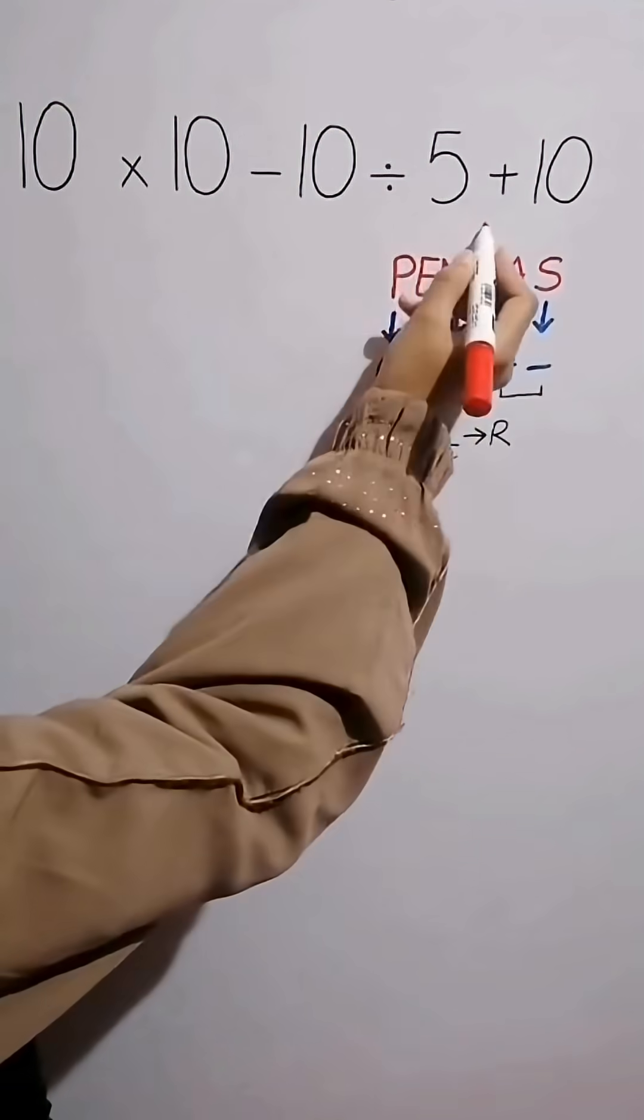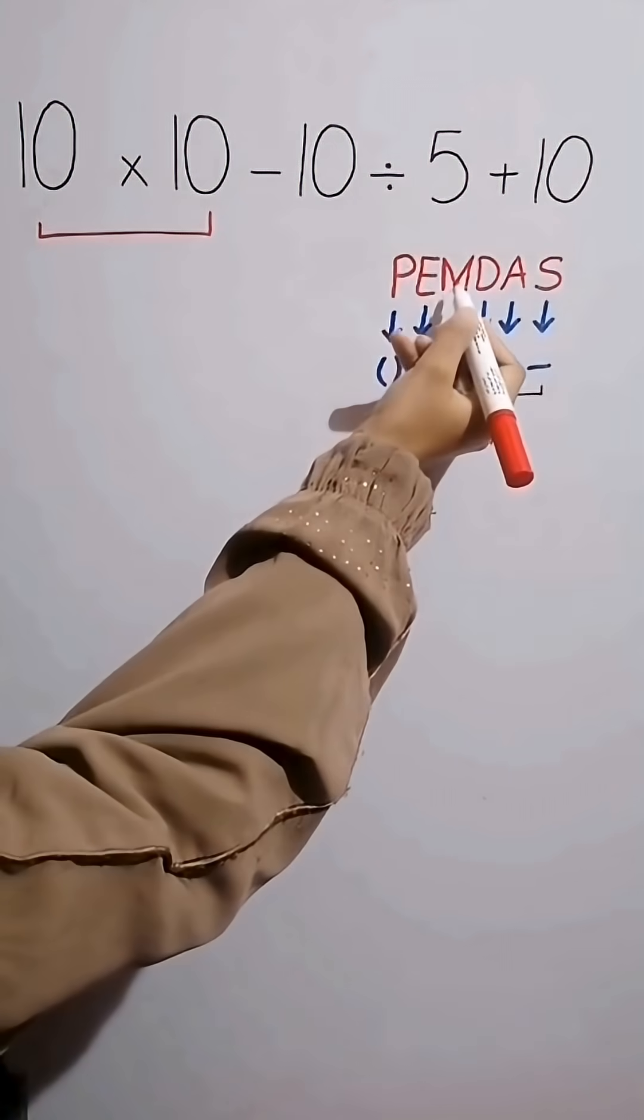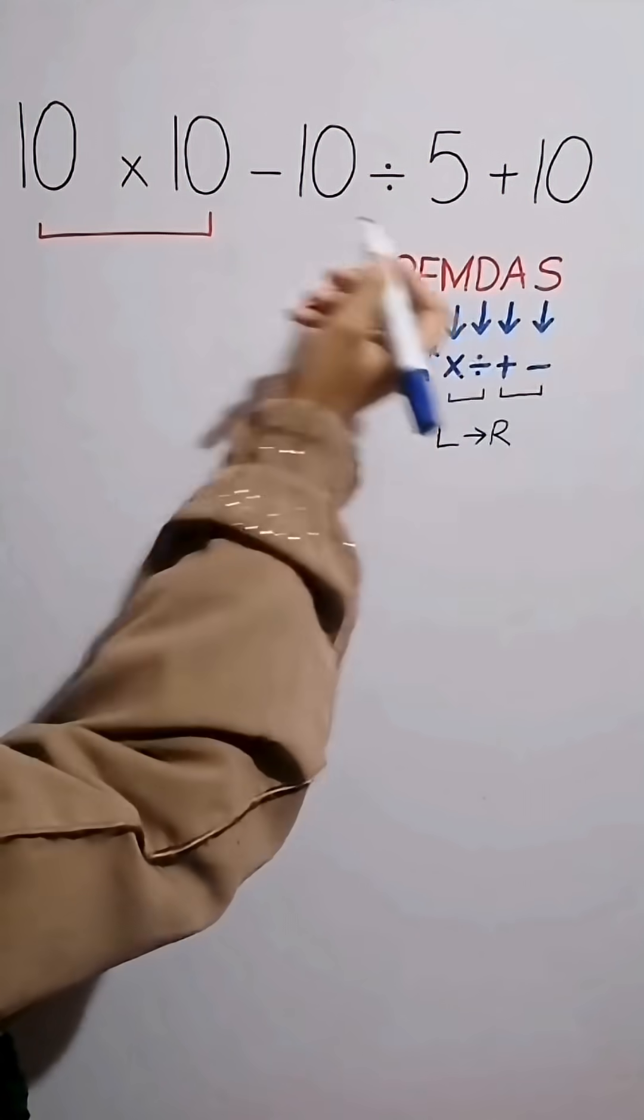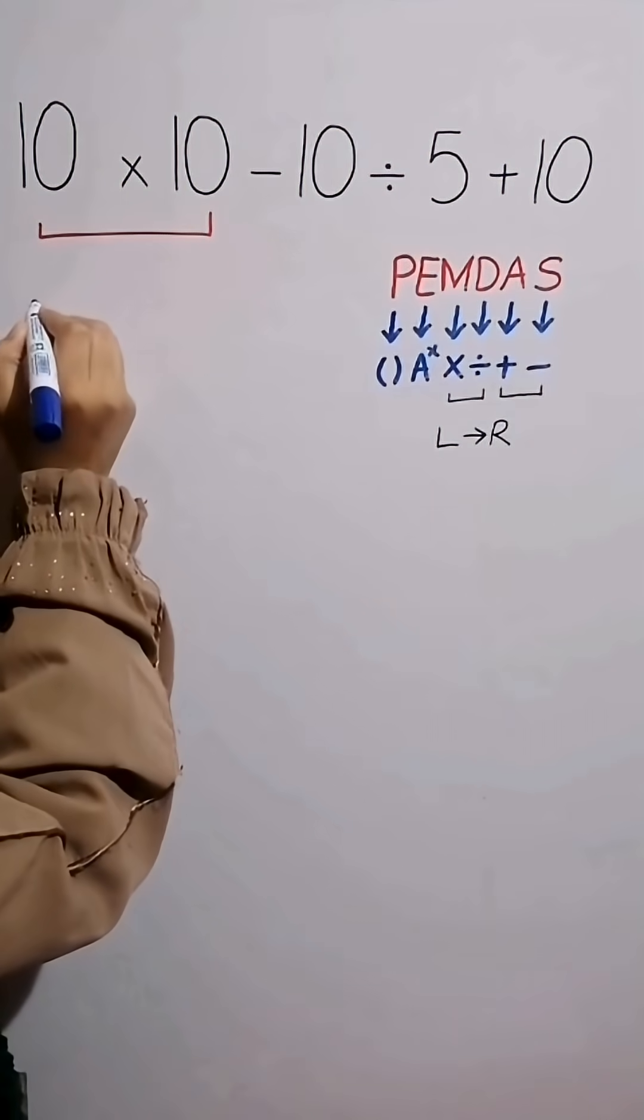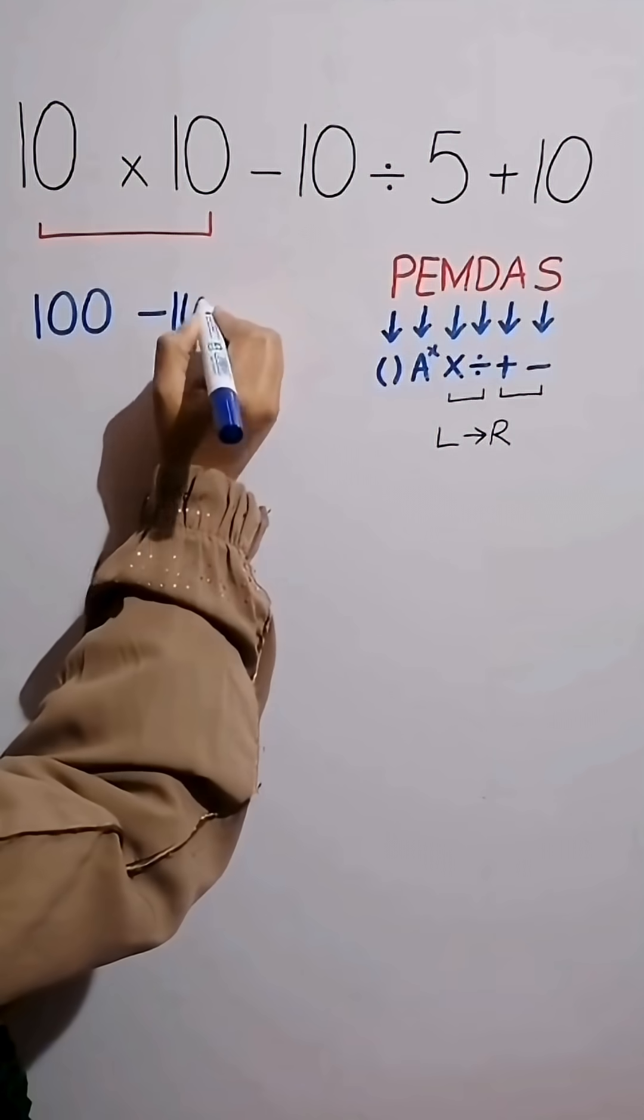In this expression, we start with the multiplication between 10 and 10. Because according to PEMDAS rule, multiplication has higher priority than all other operations. 10 times 10 equals 100, minus 10 then divide it by 5 plus 10.